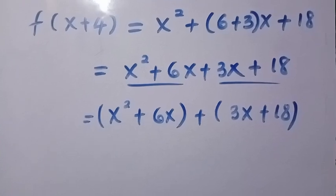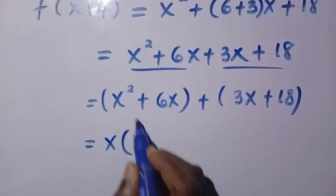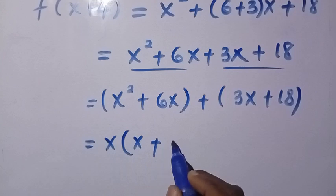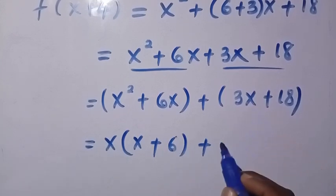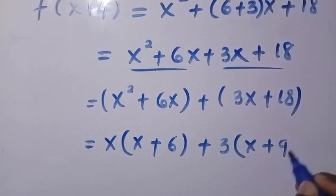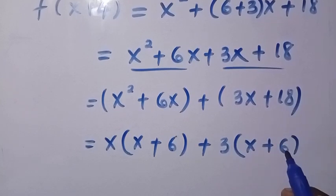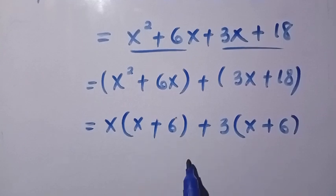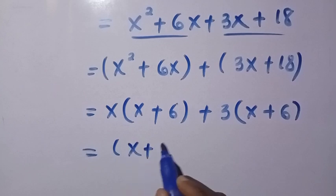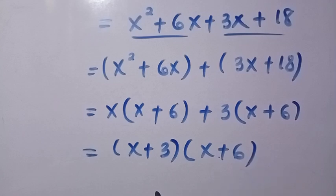In the next step we factor out x. By factoring out x, we have x(x + 6). Let's take out 3 from here. When we take out 3 and divide, we have 3(x + 6). So x+6 is common here. We take one and combine the coefficients together, which is x + 3. Then we have x + 6 as well. So f(x+4) = (x+3)(x+6).